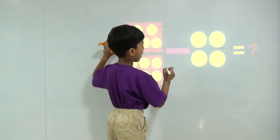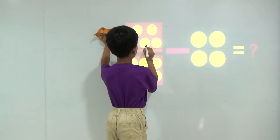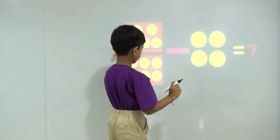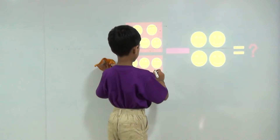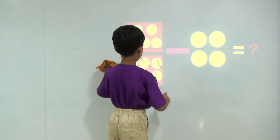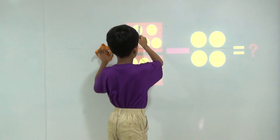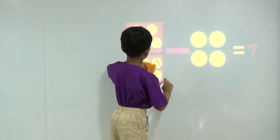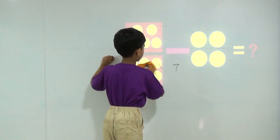I have 11 smileys. My bhaiya takes 4 smileys. So how many smileys do I have? Let's count. 1, 2, 3, 4, 5, 6, 7. So the answer will be 7.